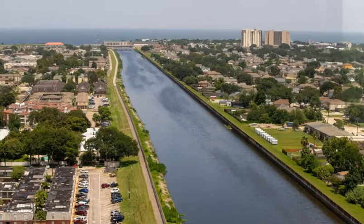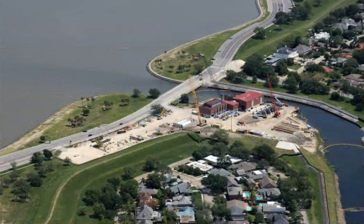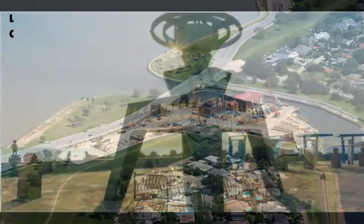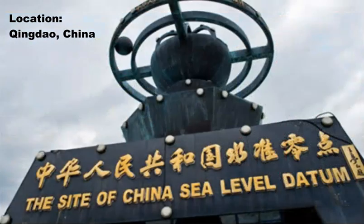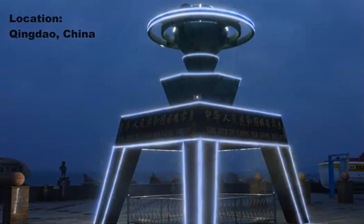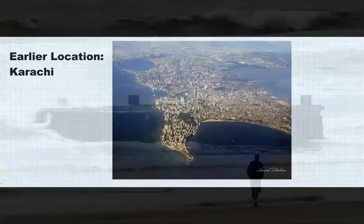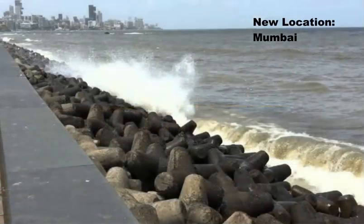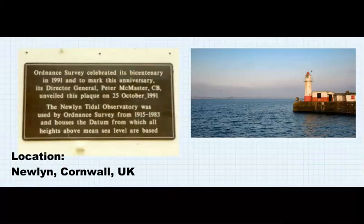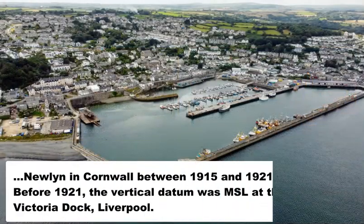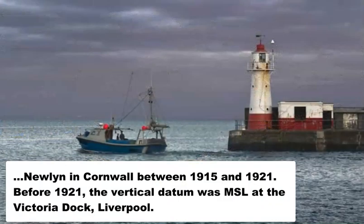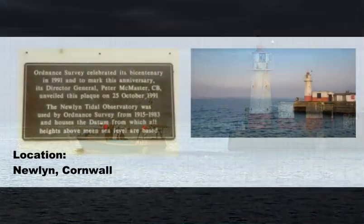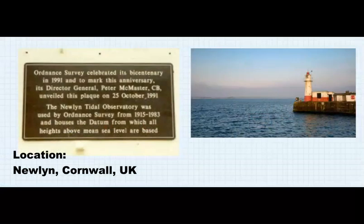The datum point is usually known as the lowest point in the country, called mean sea level. This is China's mean sea level — the sea level datum for all Chinese structures. The sea level for India was located at Karachi but has now been moved to Mumbai. In the UK, the Ordnance Datum — the zero meter height on UK maps — is the mean sea level measured in Newlyn, Cornwall, between 1915 and 1921.